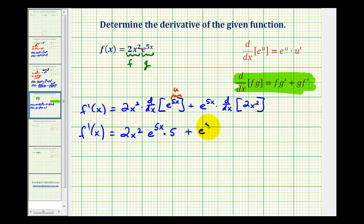Plus e to the power of 5x times the derivative of 2x squared, which would be 4x.